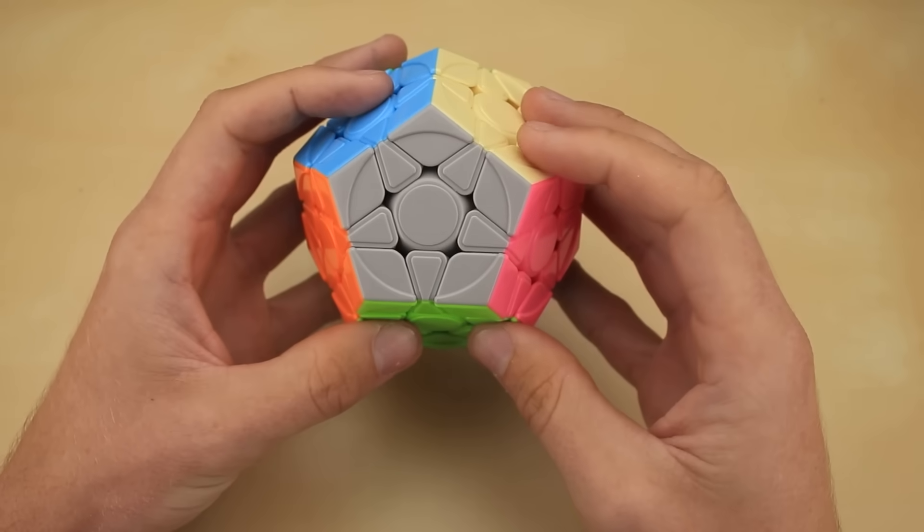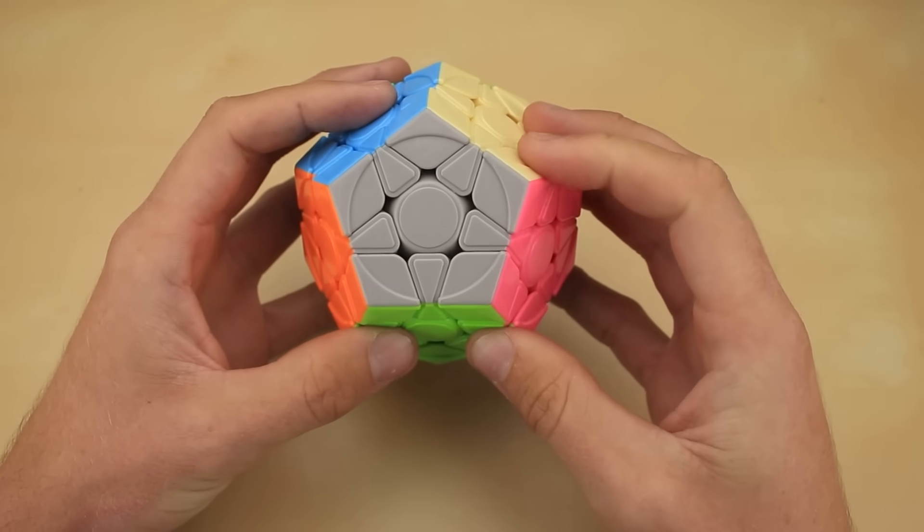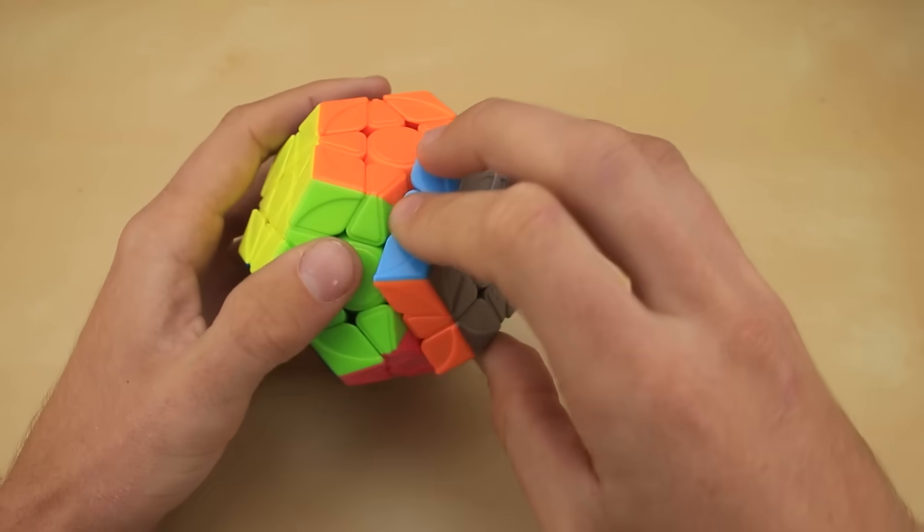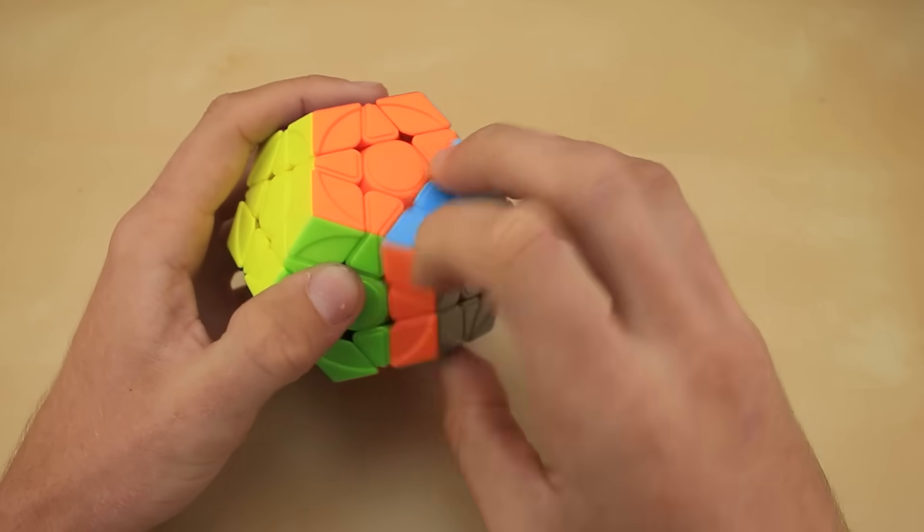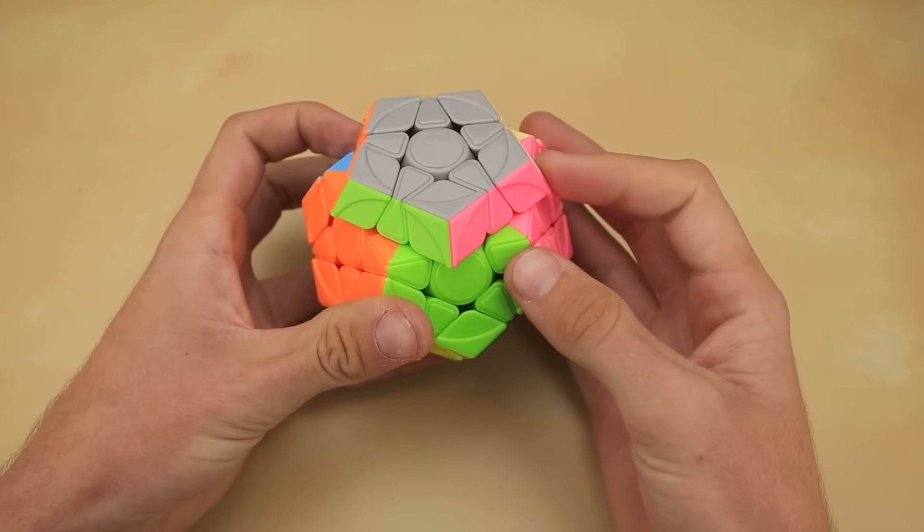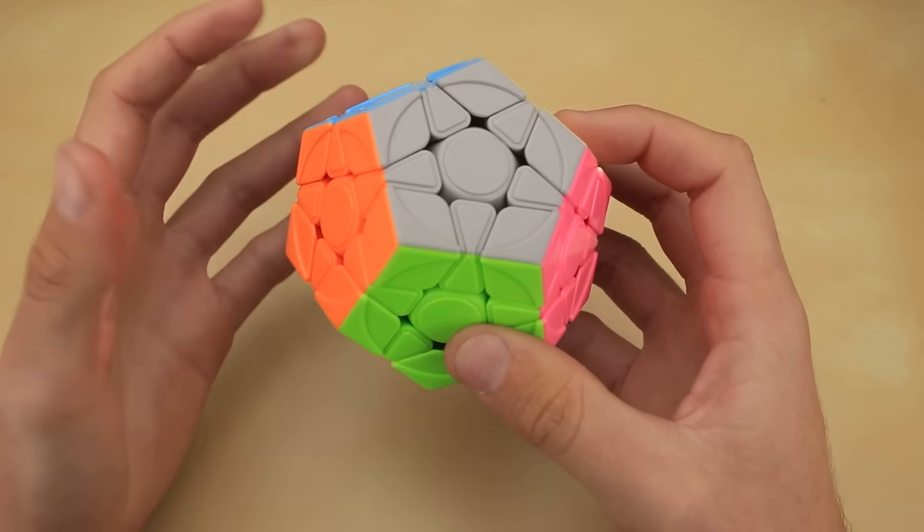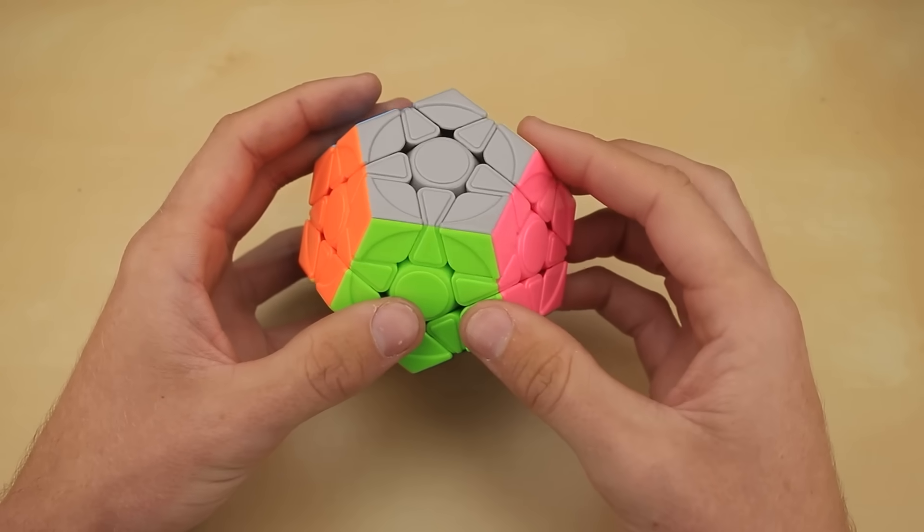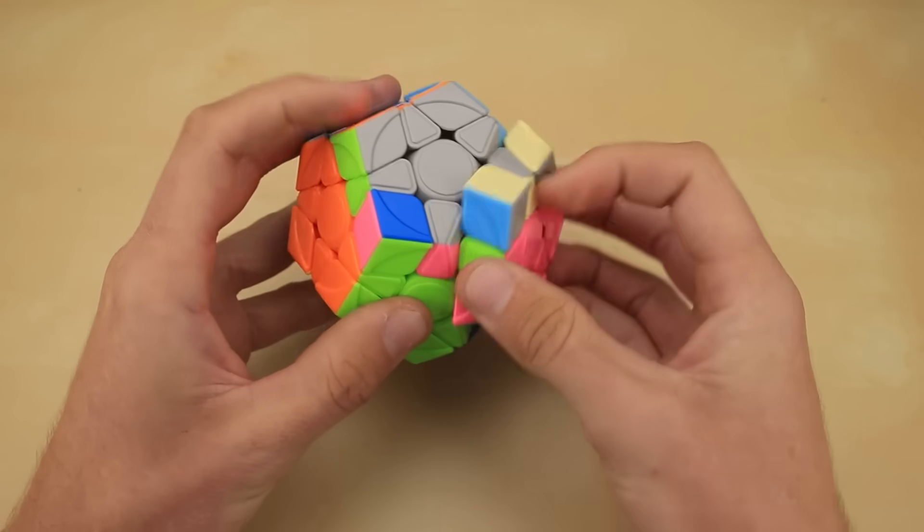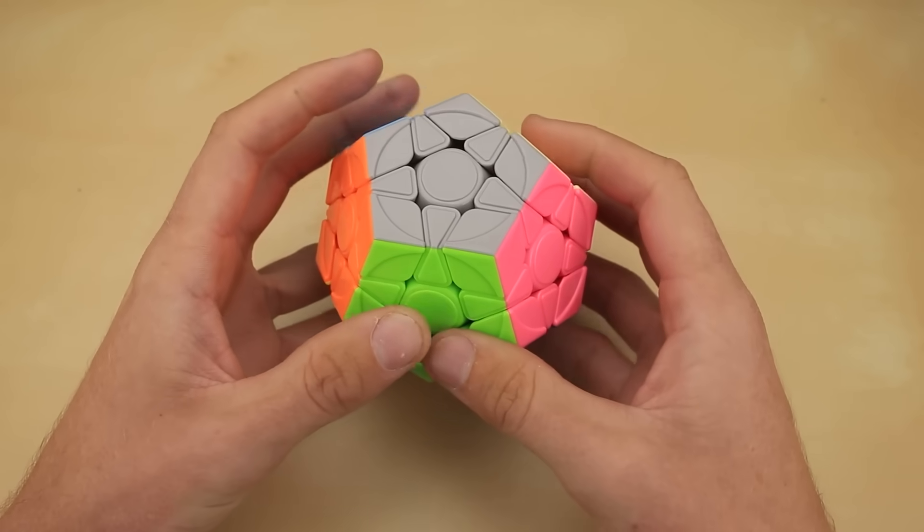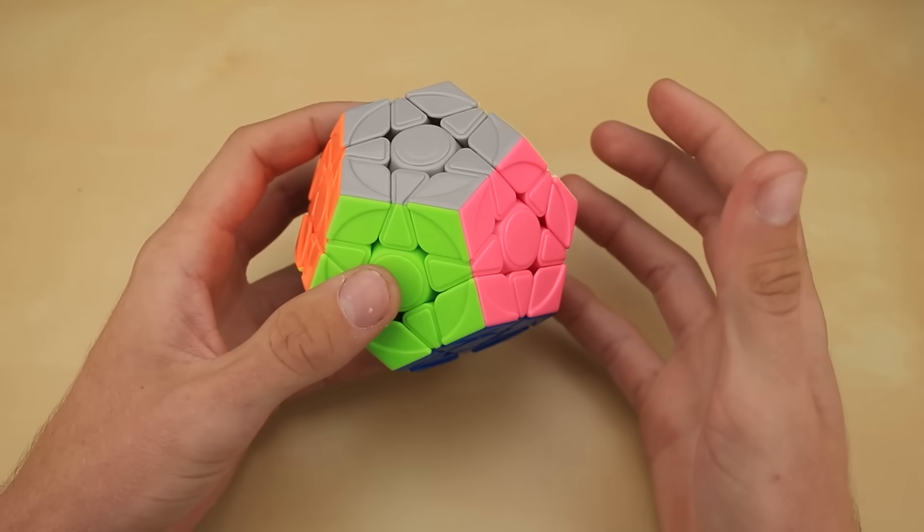Now, I would describe this Megaminx as almost fast enough, but I would definitely like it to be a touch faster. You can definitely feel that friction I'm talking about from the springs, and sometimes I feel like I have to flick really hard in order to get a full turn. So that increase in speed and decrease in friction should be perfect for this puzzle. Now, as for stability, this is already a very stable cube in the first place, and once I tear it open, I'll show you why I believe adding maglev won't affect that negatively.